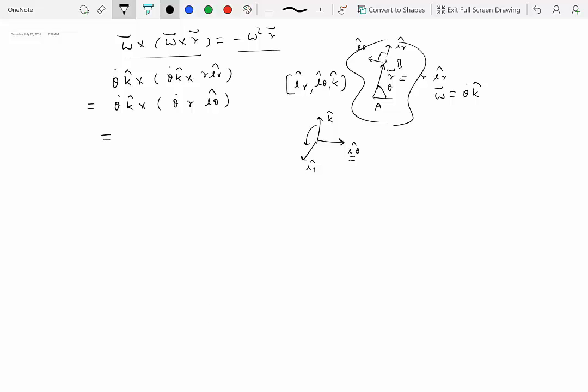And then here we have theta dot k hat cross, so what is this? This is theta dot squared r, and k cross e_theta hat. Now what is k cross e_theta hat? That's minus e_r hat. So this is minus theta dot squared r e_r hat. But r e_r hat is the same as the position vector r, so this can be written as minus theta dot squared r, which is the same as minus omega squared r.